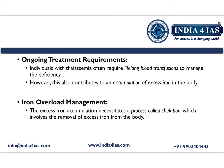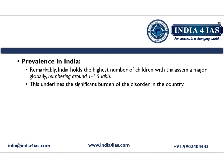The ongoing treatment for thalassemia is lifelong blood transfusions to manage the deficiency of hemoglobin. However, this contributes to excess accumulation of iron in the body. To overcome this, chelation is done, which is the removal of excess iron from the body. India holds the highest number of children with thalassemia — around 1 to 1.5 lakh.